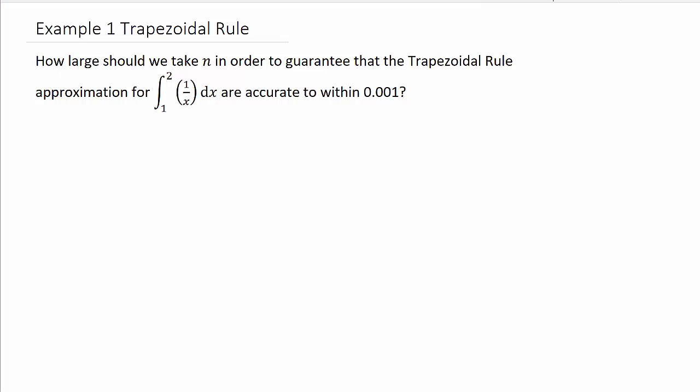All right, so let's take a look at example one with the trapezoidal rule. It says, how large should we take n in order to guarantee that the trapezoidal rule approximation for the integral one over x from one to two are accurate to within point zero zero one?